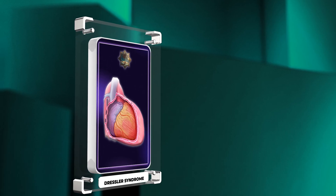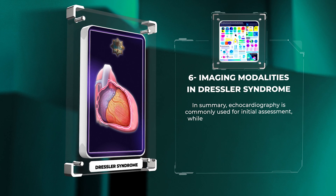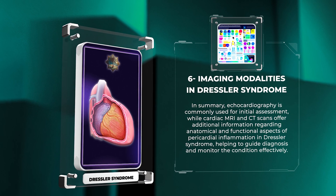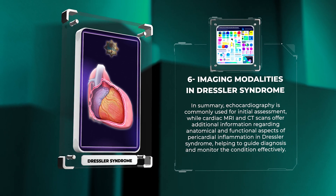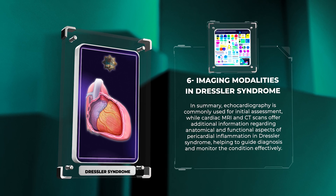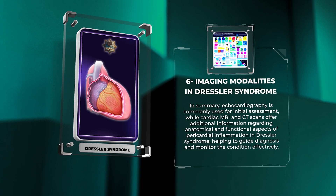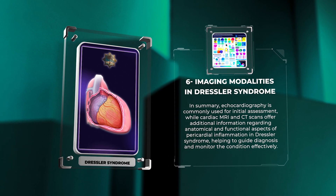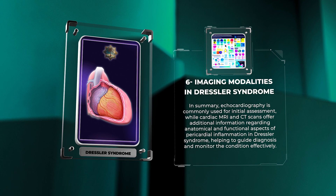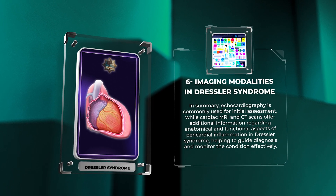Echocardiography is commonly used for initial assessment, while cardiac MRI and CT scans offer additional information regarding anatomical and functional aspects of pericardial inflammation and Dressler syndrome, helping to guide diagnosis and monitor the condition effectively.